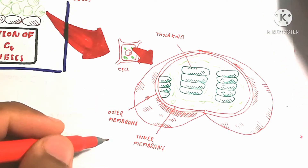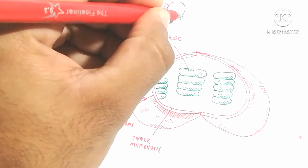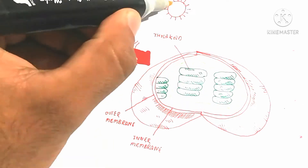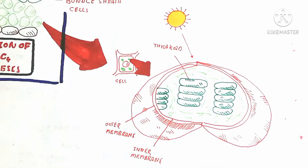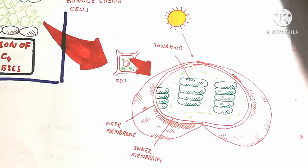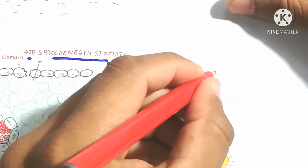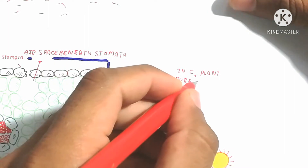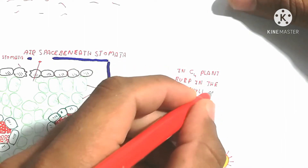The thylakoid membrane contains an electron transport chain. This electron transport chain is used for making ATP and NADPH. Water is split — H₂O is converted into electrons, protons, and oxygen.